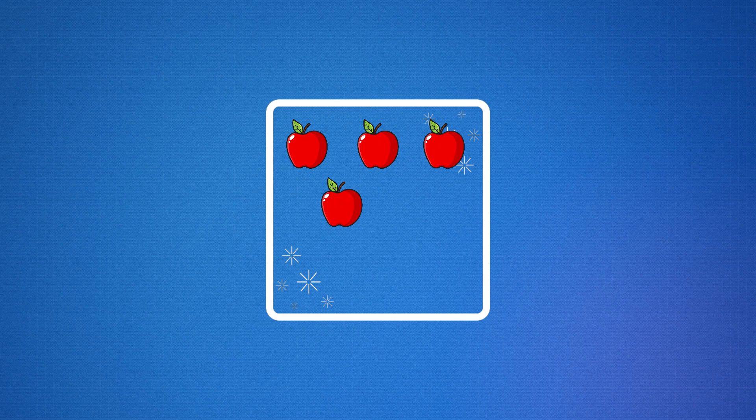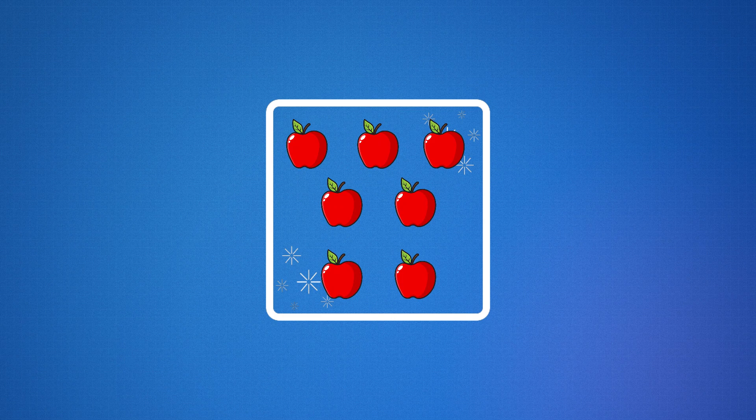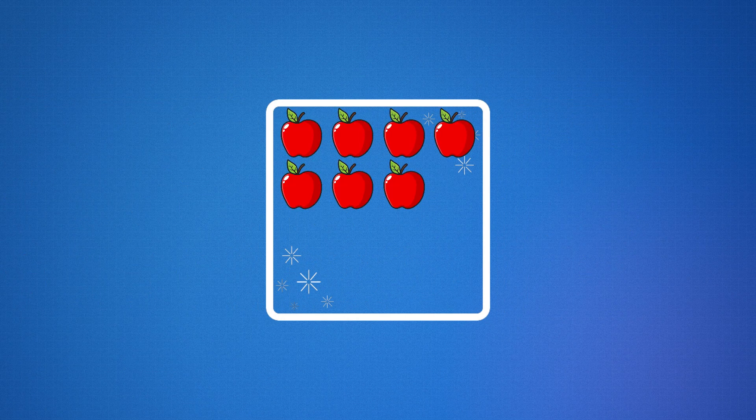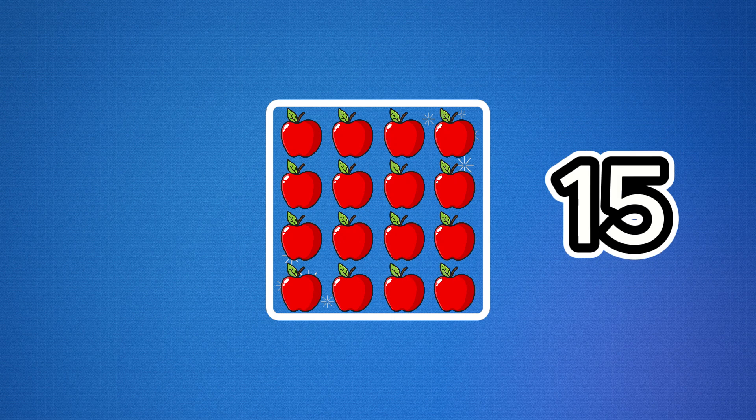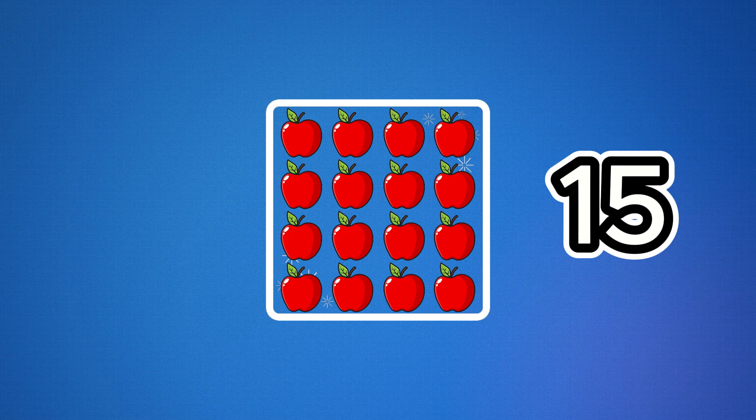If you have one group of seven apples, how many apples do you have? That's right, just seven apples. What about one group of 15 apples? You still have 15 apples. So when we multiply by one, we're really saying, how many are in one group?